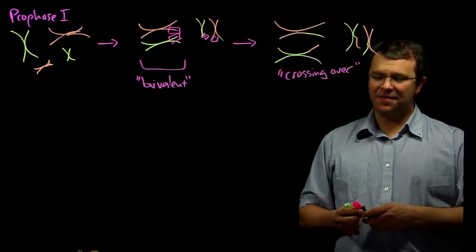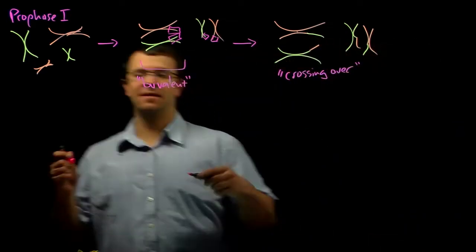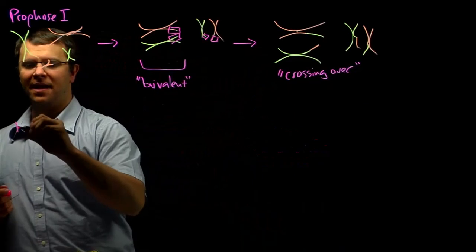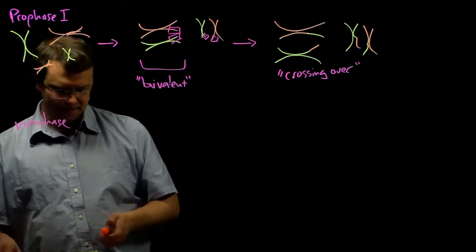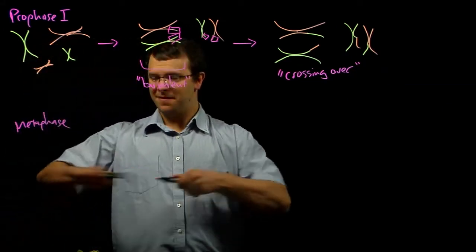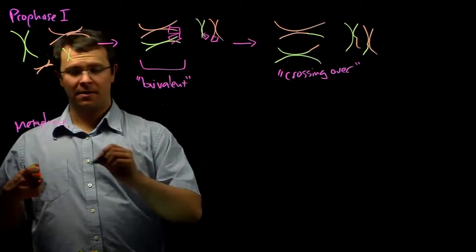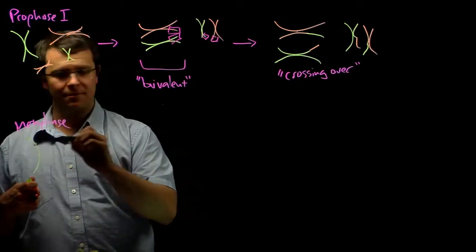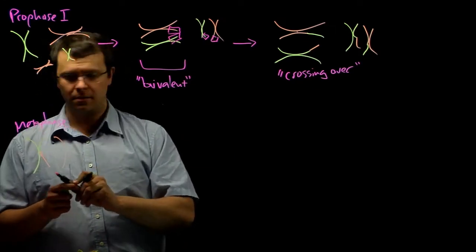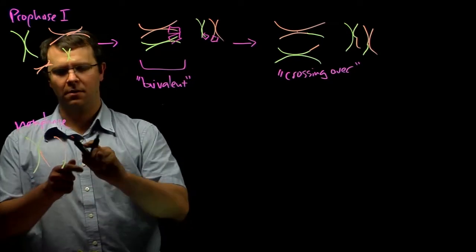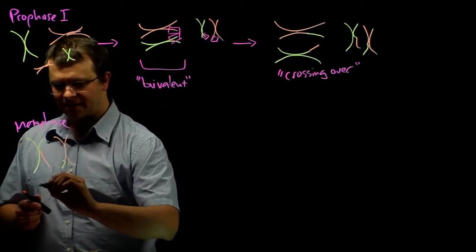And then things start to look very much like mitosis because from prophase, we enter metaphase. And in metaphase, the chromosomes line up in the center of the cell and try to maintain my color scheme. But instead of them lining up right down the center, like they did in mitosis,